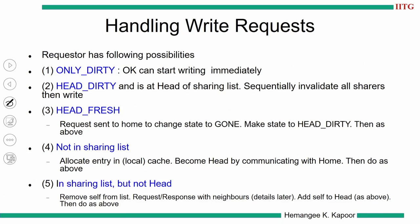The easiest case is 'only dirty': the requester is the only node in the system, the home memory is pointing to the requester, and its status is only dirty. Only dirty means the home is in the gone state — this is the perfect situation where we can start writing immediately.